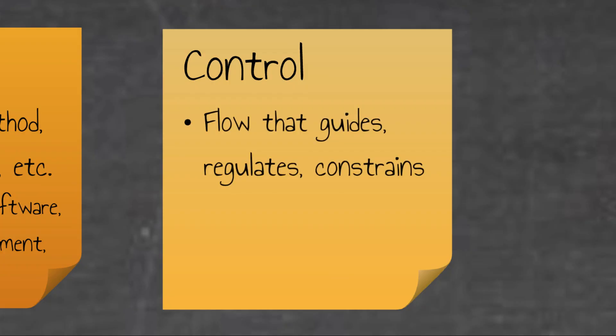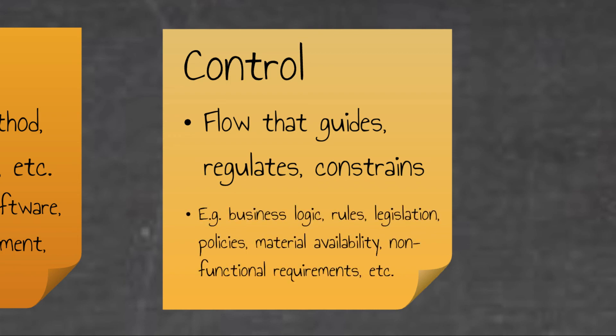Suitable examples of controls are things like business logic, rules and regulations, legislation, policies, conformance to specific standards, time constraints, programming constraints, process capabilities, system capabilities, material availability, etc.